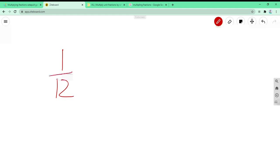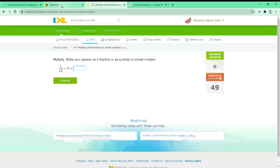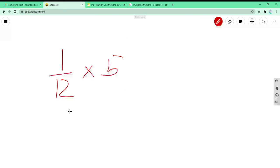1 over 12 times 5 equals. So we always have to do 5, I mean over 1, whenever there's a number by itself. So first we have to multiply 1 times 5, which is 5 over 12, because 12 times 1 is 12.